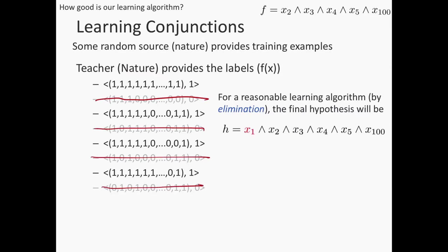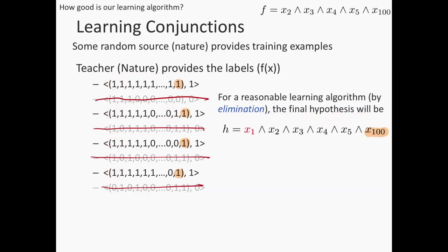Elimination proceeds by deleting all examples where the label is 0, then looking at each feature one at a time. x100 is 1 among all examples where the label is 1, so x100 is in the conjunction. x99 has value 0 for one example where the label is 1, so x99 cannot be in the conjunction. Going through this, you get x5, x4, x3, x2 — but x1 happens to be 1 on all four positive examples, so the algorithm learns x1 ∧ x2 ∧ x3 ∧ x4 ∧ x5 ∧ x100, which is not the same as the true function.